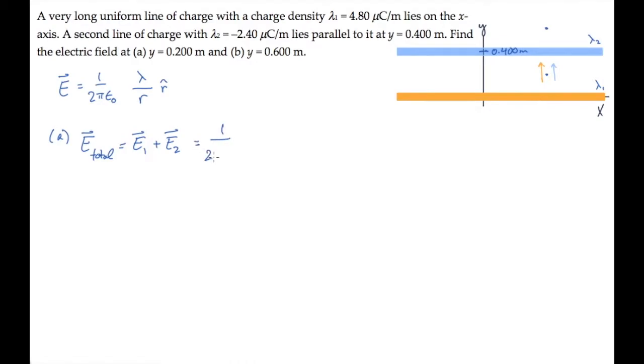That gives us 1 over 2 pi epsilon naught, lambda 1 over r1 in the positive y direction. I'll put magnitudes on the line charge densities, because we know the directions explicitly, plus the contribution from the second one, lambda 2 over r2, also in the positive y direction.